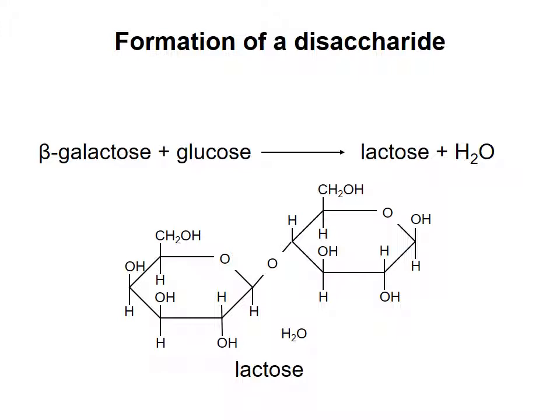The bond that is formed is called an O-glycosidic bond. When an O-glycosidic bond is formed between two monosaccharides, at least one of the anomeric carbons is involved. For lactose, the anomeric carbon of galactose is involved in the bond, but not the anomeric carbon of glucose.